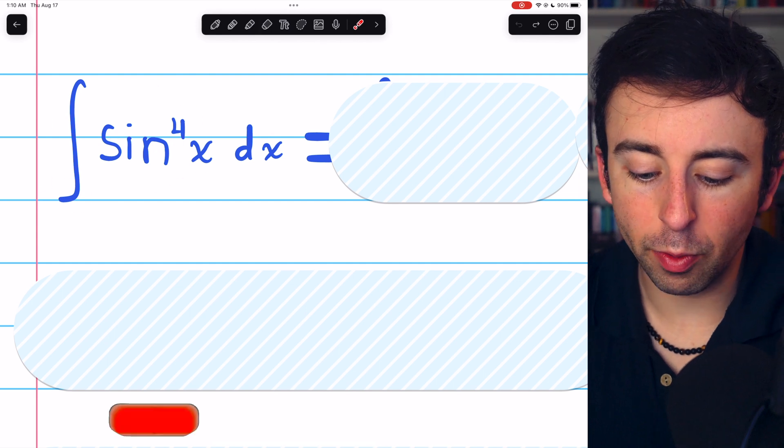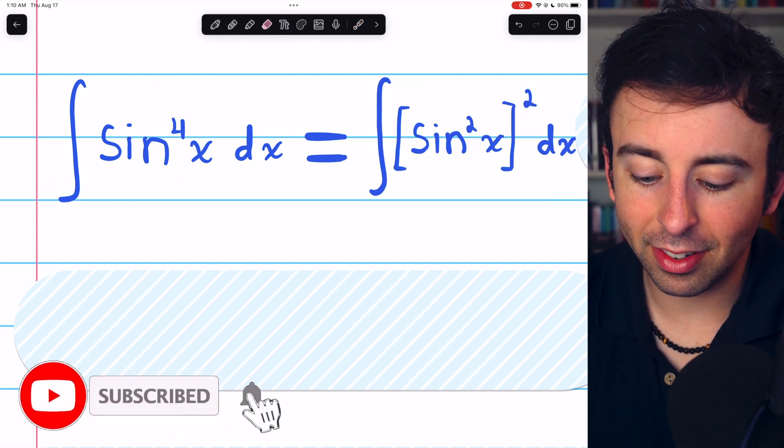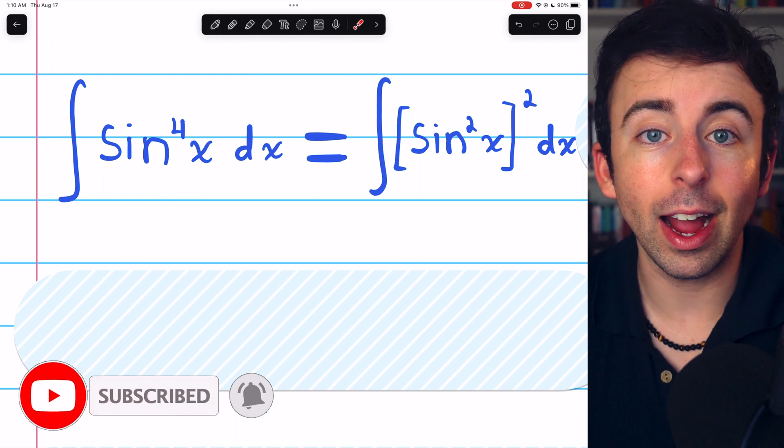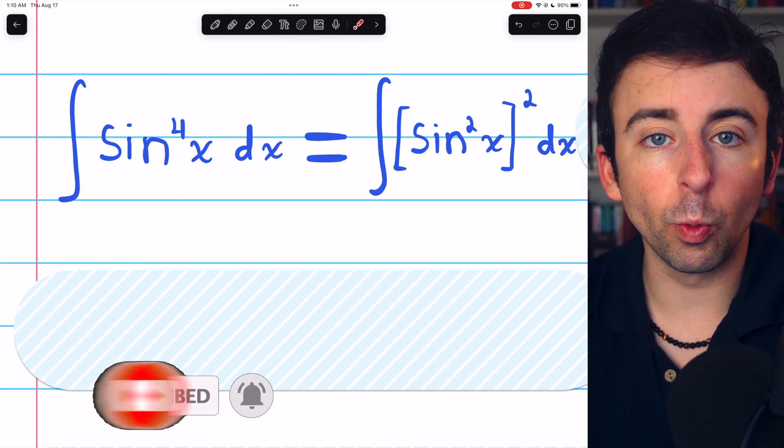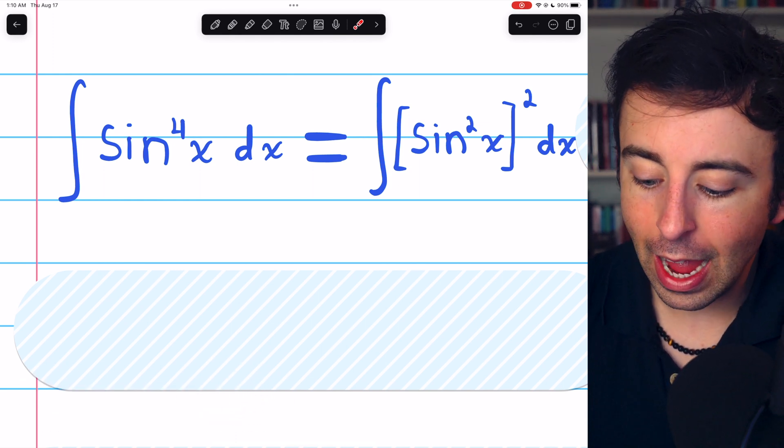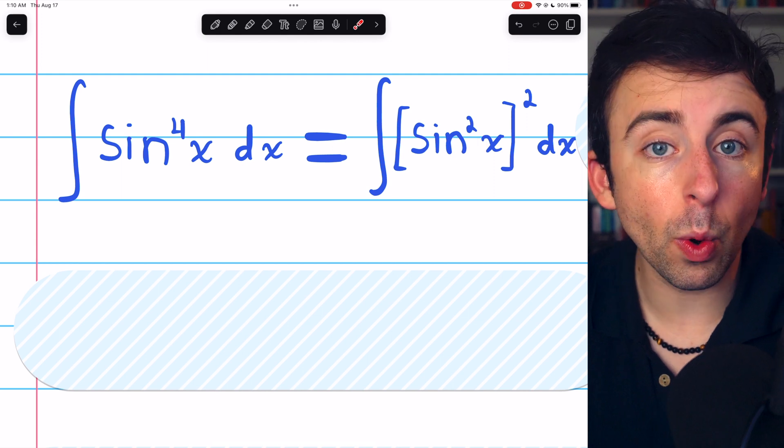To integrate sine x to the power of 4, we want to express it as a power of sine squared. We can rewrite sine to the 4 as sine squared squared.